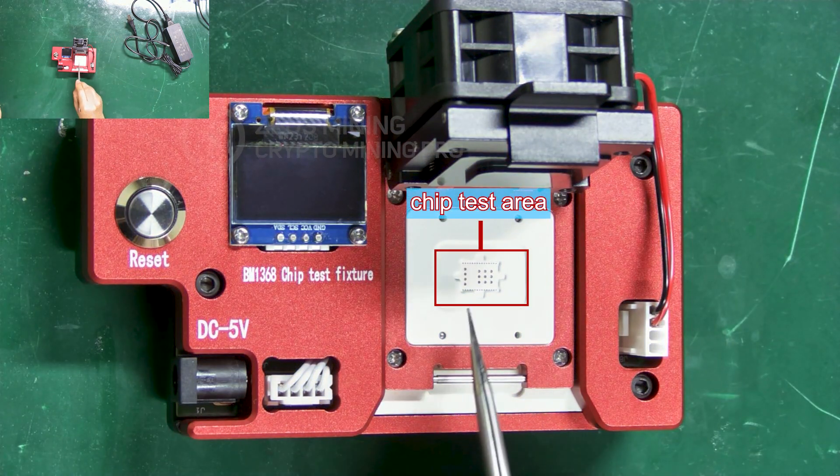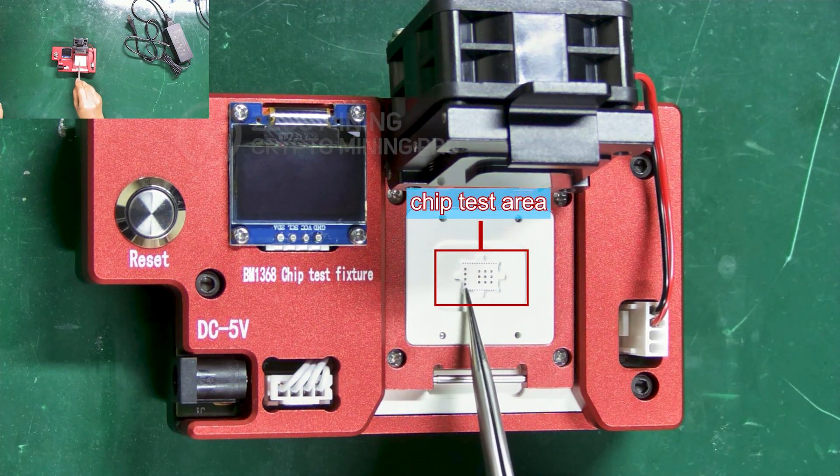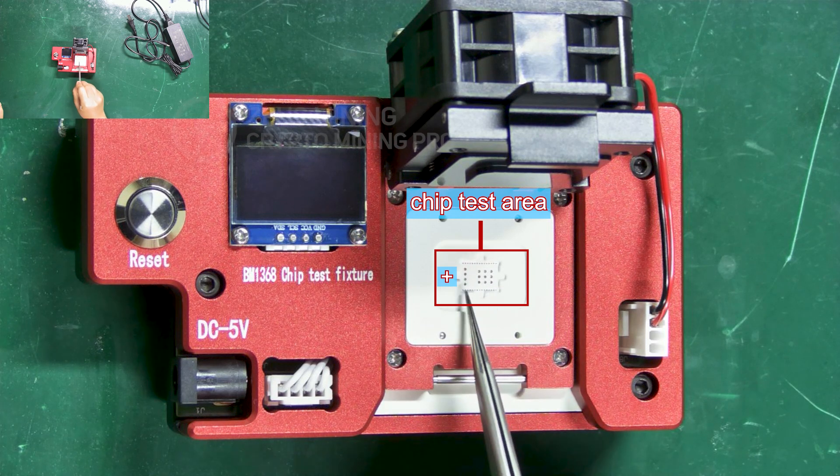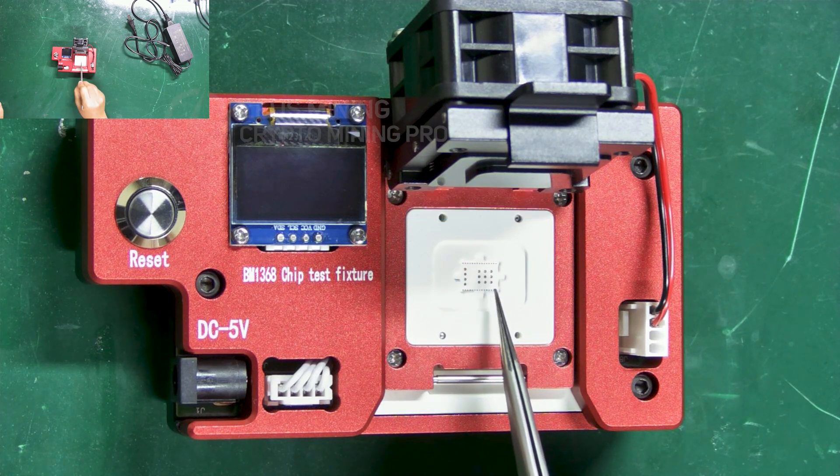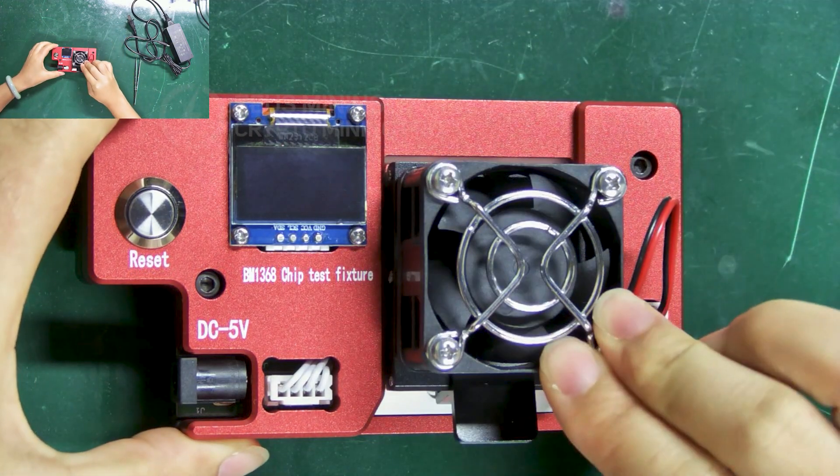We can see the chip test area. The left side corresponds to the positive pole of the chip, the other side corresponds to the negative pole. Next I will show you how to use it to test the ASIC chip.